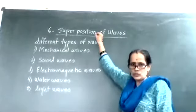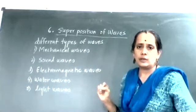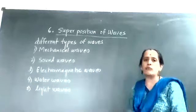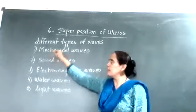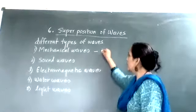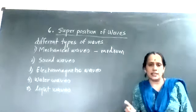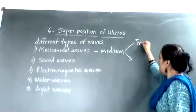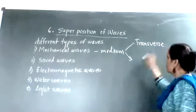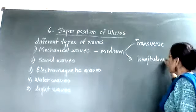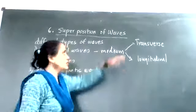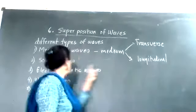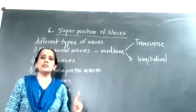We are going to start the chapter on the principle of superposition of waves. In the introduction part, we are going to see the different types of waves studied so far. In Class 11, we studied mechanical waves. These mechanical waves require a certain medium for their propagation. Two types of mechanical waves were studied: transverse waves and longitudinal waves. The example of a transverse wave is a wave set up along the length of a string, and the longitudinal wave is your sound wave.